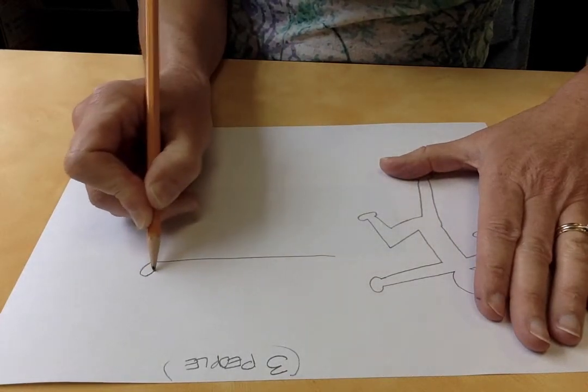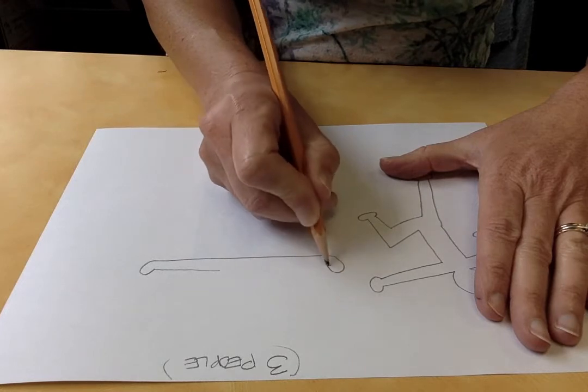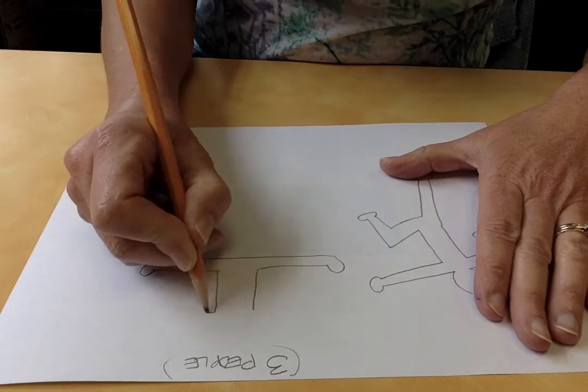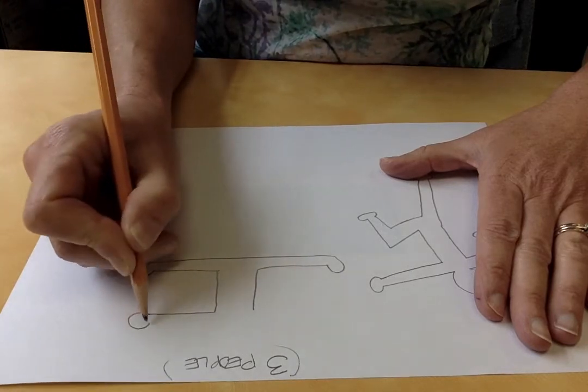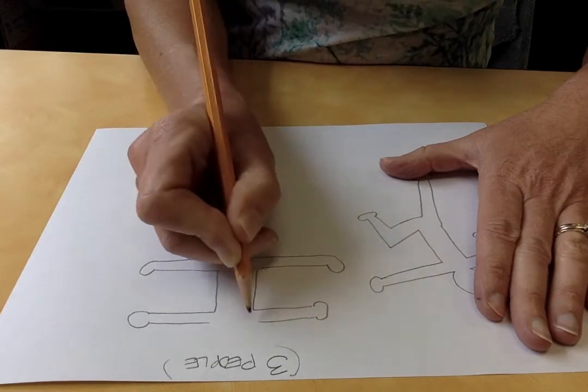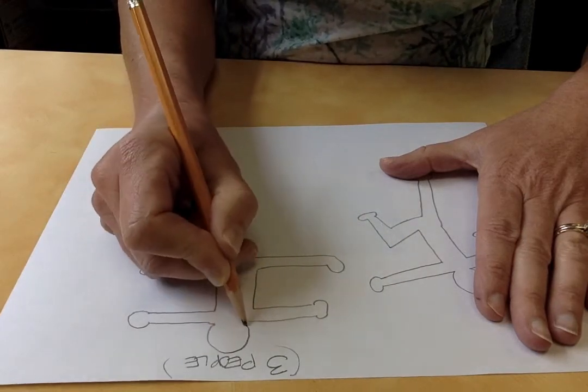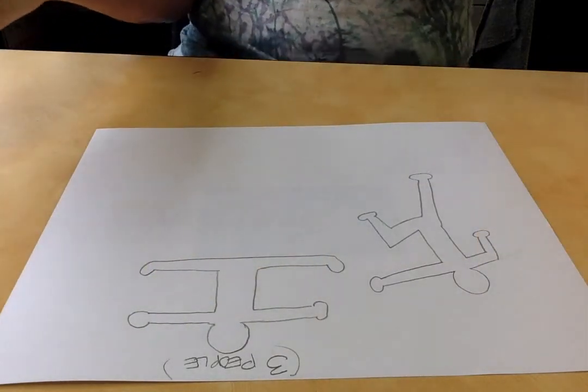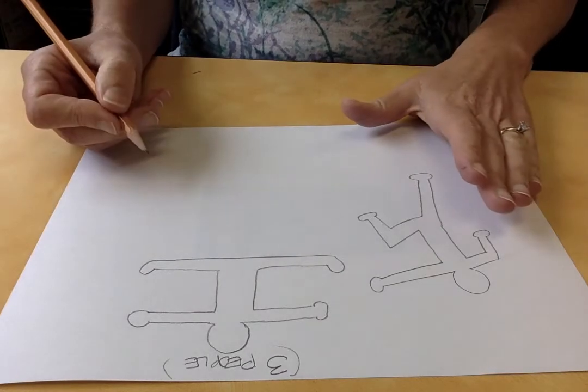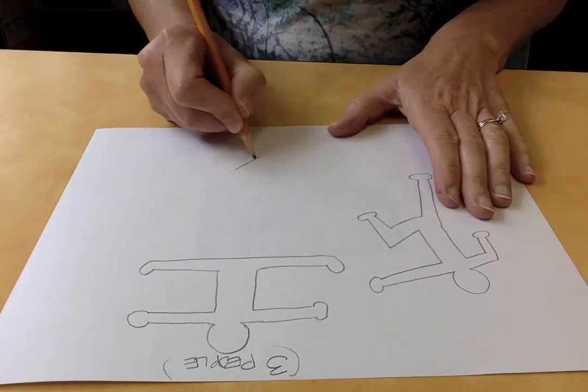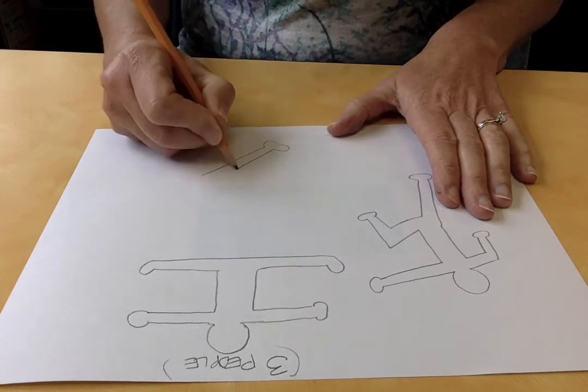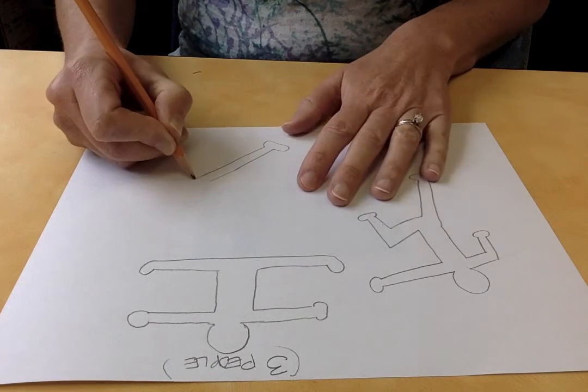Let's see, we'll put somebody doing the splits with arms out. Whoops, that's a really big hand—oh well. And then my head. Okay, so there's my second person. My third person, I'm gonna make them kicking something. Long leg and then the other